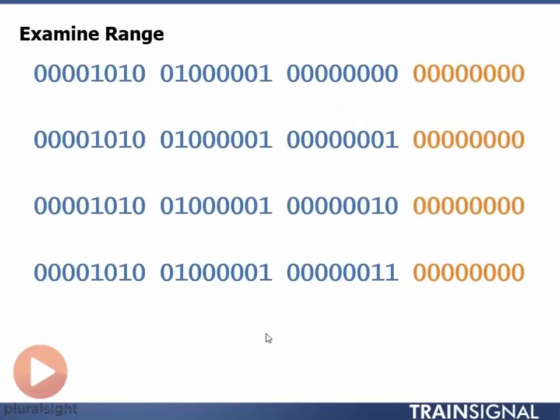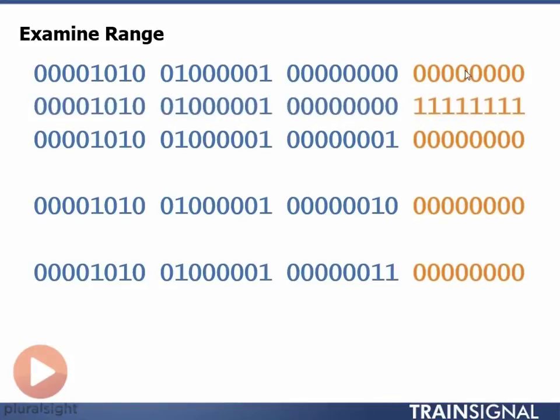Let's take a look at the ranges of each four of those networks. So in here, once again, I have my network portion in blue. My host portion of my address is in orange. I want to find the range of each of these four networks. So my first network here, 10.65.0.0, that ends, the last address in there, my broadcast address, is 10.65.0.255.